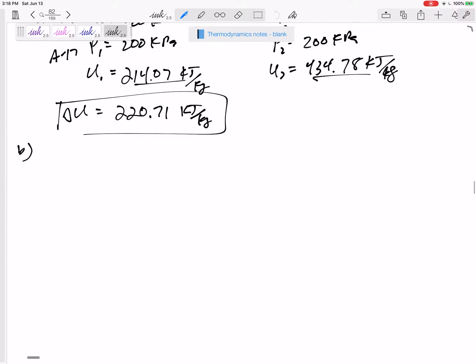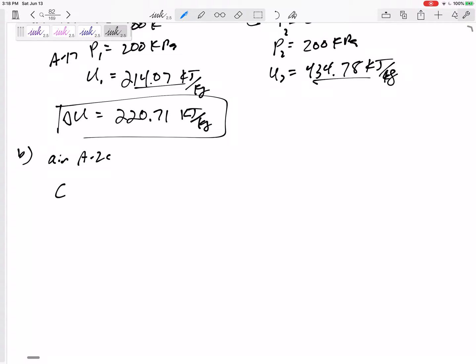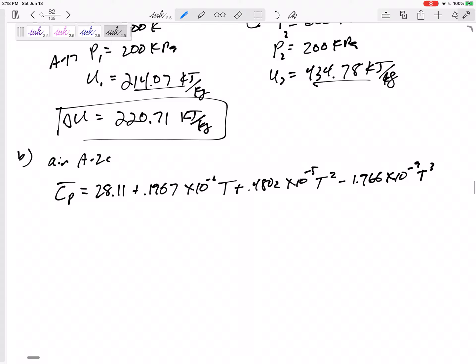For air, Table A2C, CP bar was 28.11 plus 0.1967 times 10 to the negative 2 T, plus 0.4802 times 10 to the negative 5 T squared, minus 1.966 times 10 to the negative 9 T cubed. But that's CP.